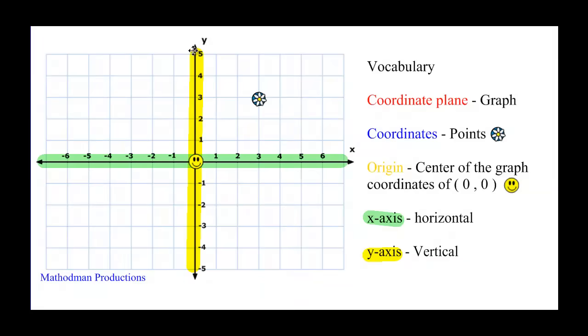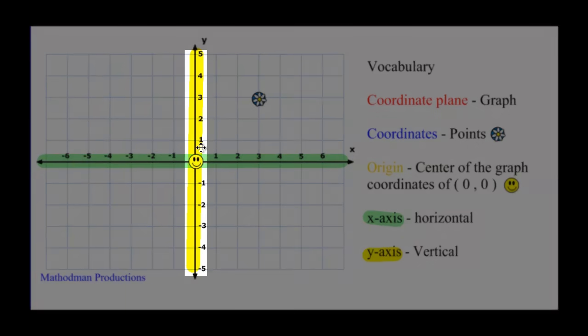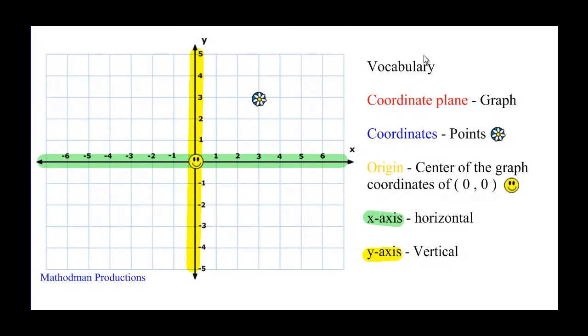Y-axis, up and down, vertical. All the numbers above the origin on the y-axis is positive. Everything below the origin is negative. If you want, please pause the video and maybe study the vocabulary words. These are very important. And take a look at the graph so you know what's what.